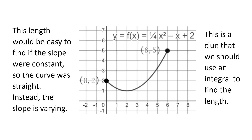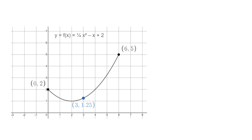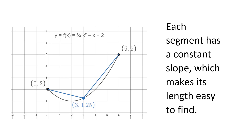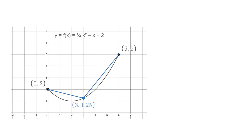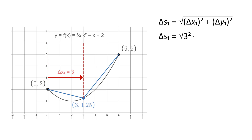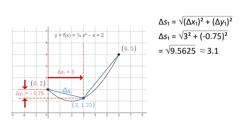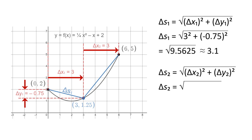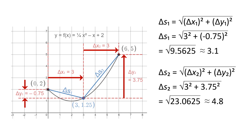That is an indication that integration could be helpful here. We break the curve up into several parts and approximate each part with a straight segment. This solves the problem of the varying slope — for each individual segment, the slope is constant. Starting with only two segments, each with the same value of delta x: the segment on the left has delta x equal to 3 and delta y equal to negative 0.75, so its length delta s is about 3.1 units. The segment on the right also has delta x equal to 3 and delta y equal to positive 3.75, so its length is about 4.8 units. Combining those, we get a total length of 3.1 plus 4.8 equals 7.9 units.